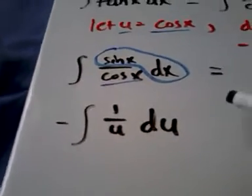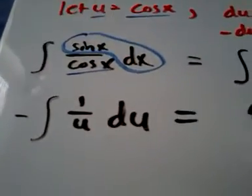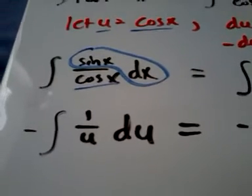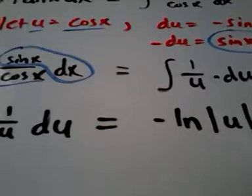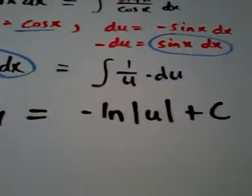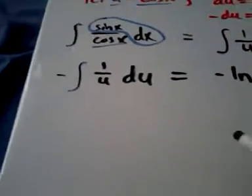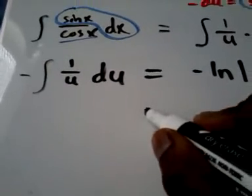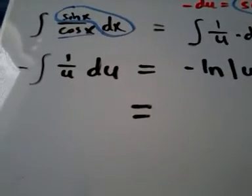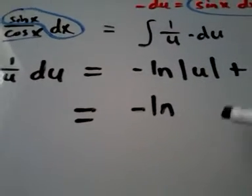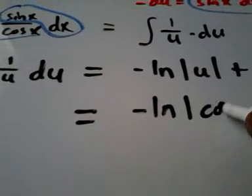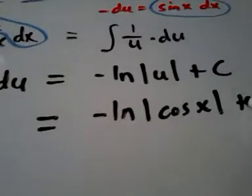Well, we know that this right here just equals the negative natural log of u plus a constant. And now let's plug that right here. Let's plug the cosine of x in for u. So we have negative natural log of absolute value of cosine of x plus c.